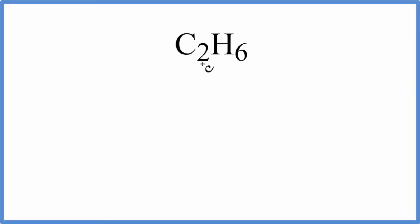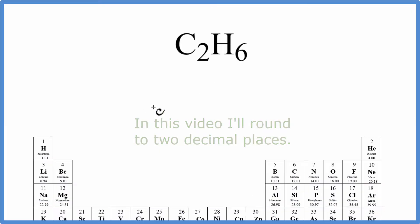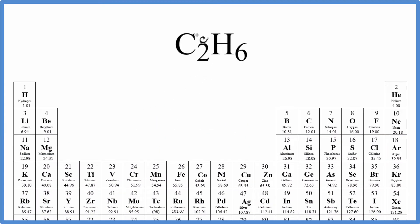In this video, we'll find the molar mass for C2H6, that's called ethane. We'll look at the periodic table and look up the atomic mass for each element, and then we'll add those together.